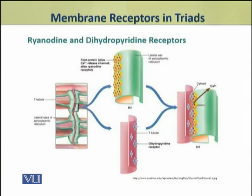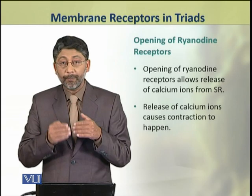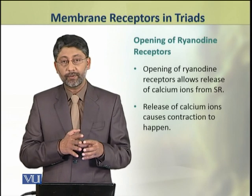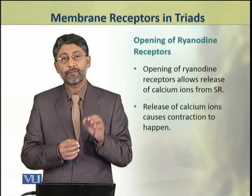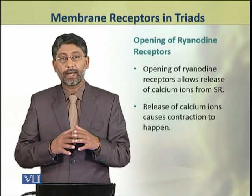In a triad, the two membranes of the terminal cisternae are closely associated and contain ryanodine receptors. The opening of ryanodine receptors leads to the release of calcium ions, which causes muscle contraction to happen.